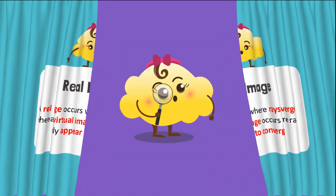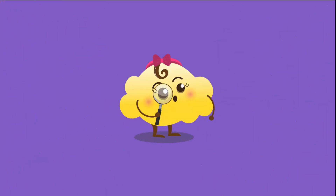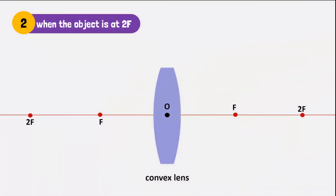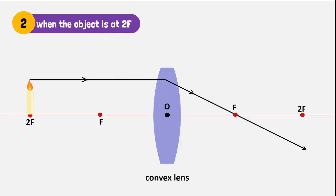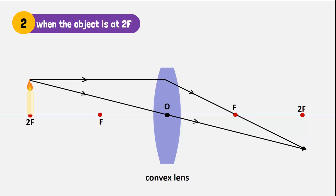Now let's place the candle at 2F and see what happens. You'll notice the rays go through a similar refraction. However, they converge at a different distance — in this case, at 2F on the other side — where a real and inverted image of the same size will form.